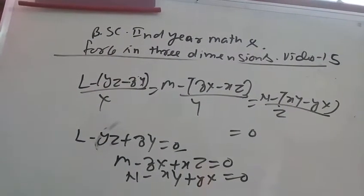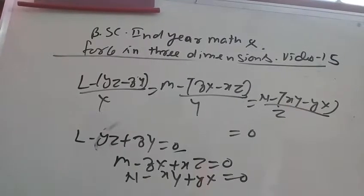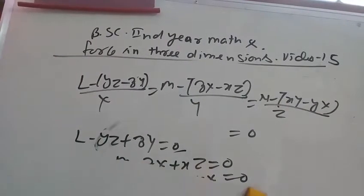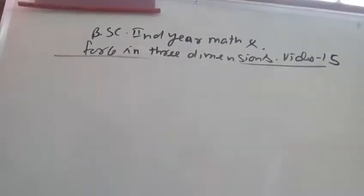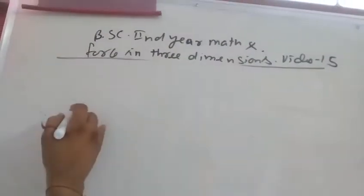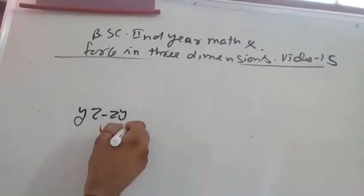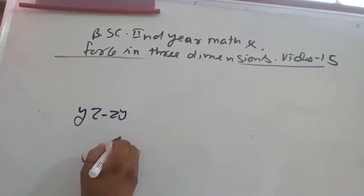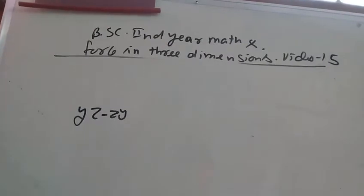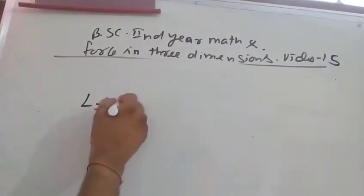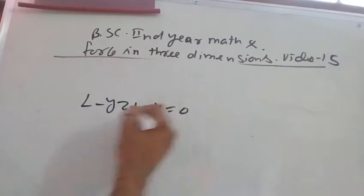We will separate some values from here, and then we will have a combination of relations. Small YZ minus ZY, we will have a coefficient of ZY. This was our L minus YZ plus ZY equal to zero.